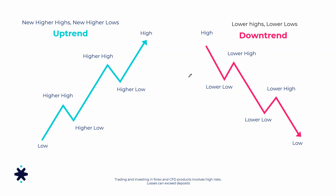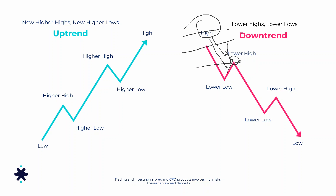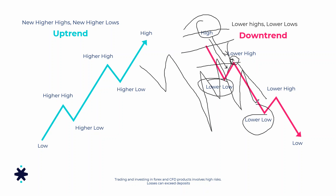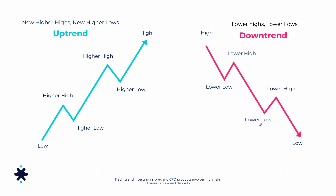The downtrend is the total opposite. When prices are going down, we start with a high price and move downward. We may have slight corrections, but each correction's high should not reach the previous high level. Prices should move to lower lows and lower highs — that confirms a downtrend, indicating a down movement in the market.